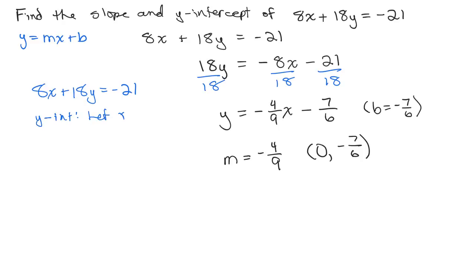So in 8x plus 18y equals negative 21, you could just put in 0 for x and you have 18y equals negative 21. And then when we divide both sides by 18, we're going to get that negative 7/6.